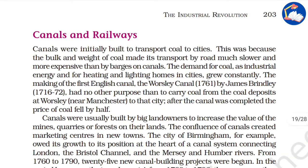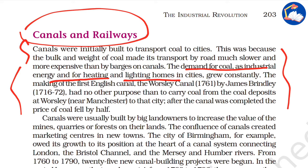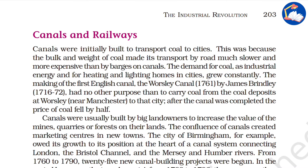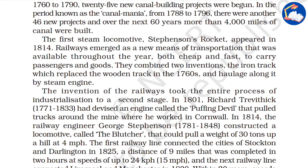Now for canals and railways. We've discussed the major causes of industrialization and the key sectors involved. With the growth of coal and iron industries, a mechanism was needed to transport goods to buyers and markets. The demand for coal as industrial energy and for heating homes in cities grew constantly. The first English canal — the Worsley Canal, built by James Brindley — had no purpose other than to carry coal from deposits to Worsley. Canals were usually built by large landowners to increase the value of their mines, quarries, and forests.